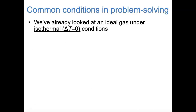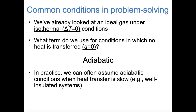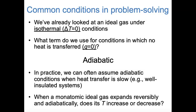When we solve problems involving pressure-volume diagrams in this course, we typically work under well-defined conditions. The first example involved an ideal gas under isothermal conditions—no change in temperature and therefore no change in internal energy. The other example involves an ideal gas under conditions in which no heat is transferred, so Q = 0. These conditions are called adiabatic conditions. In practice, we can assume adiabatic conditions if heat transfer is very slow—for example, in a well-insulated container like a thermos or a Dewar. The example we'll look at now involves a monatomic ideal gas expanding reversibly and adiabatically.